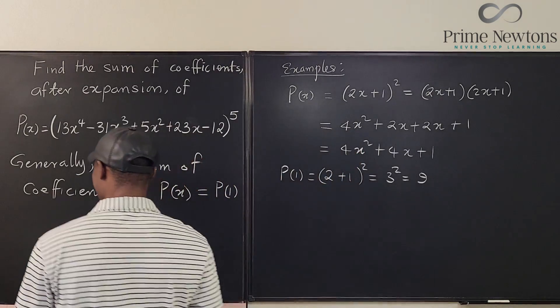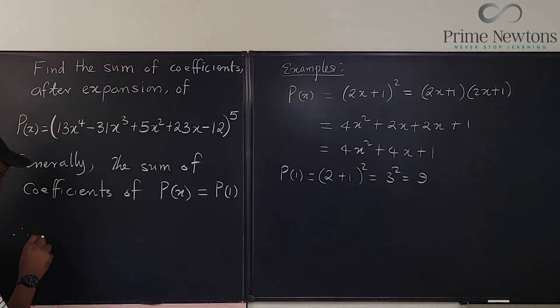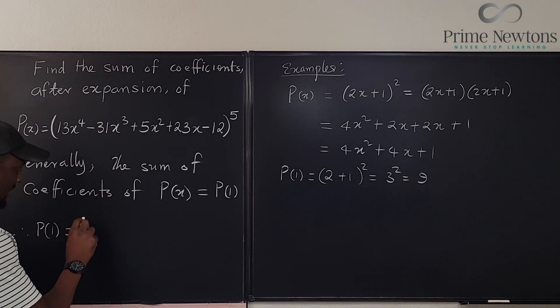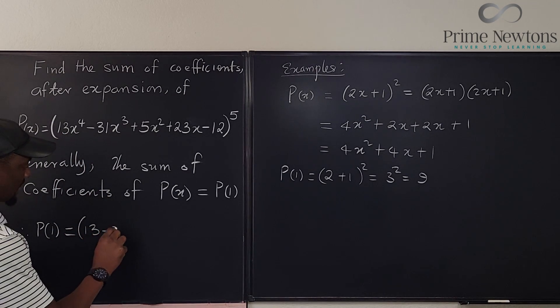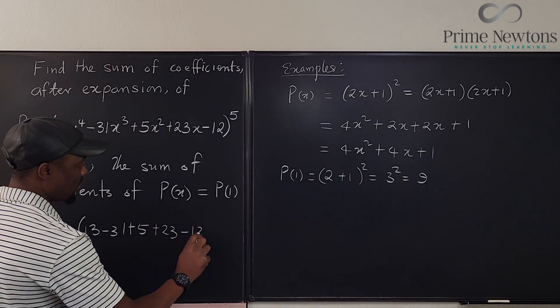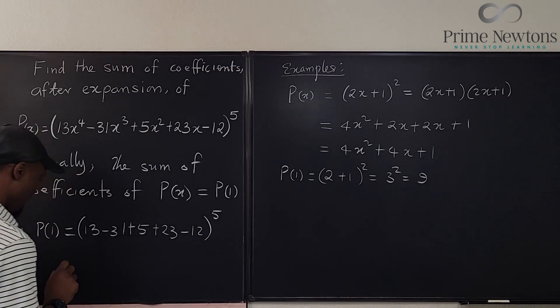So I think we should answer this question. So let's do it here. So we know, we say, therefore, P of one will be equal to just the digits. So it's going to be 13 minus 31 plus five plus 23 minus 12 raised to power five.